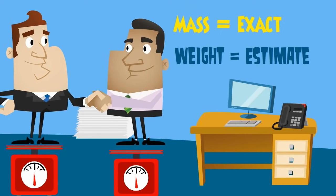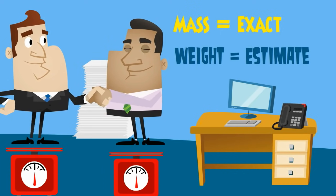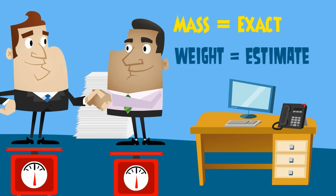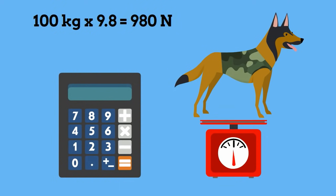To find out how much force a 100 kilogram dog exerts on the scale, just multiply by 9.8 and that equals 980 newtons.